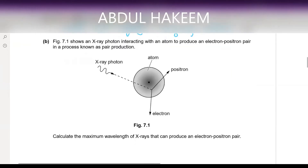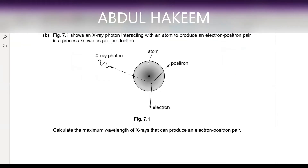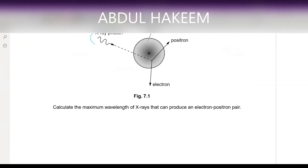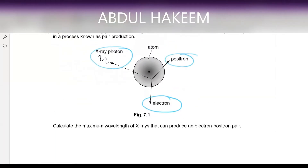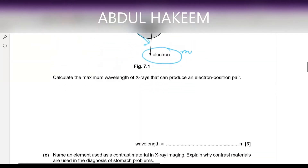The next figure shows an X-ray photon interacting with an atom to produce an electron-positron pair in a process known as pair production. One particle is the positron and the other is the electron. Calculate the maximum wavelength of the X-ray that can produce an electron-positron pair. The mass of the positron and the mass of the electron are both the same, so the whole energy is converted into two particles. Energy of the particles equals mc², but since there are two particles, energy equals 2mc².